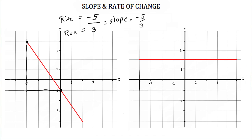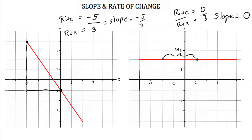Let's try the next example. We'll pick this point and this point. Because this is a horizontal line, we will not rise at all — we will only run. We're going to run three. So our rise is equal to zero and our run is equal to three, meaning our slope, and the slope of all horizontal lines, is equal to zero.